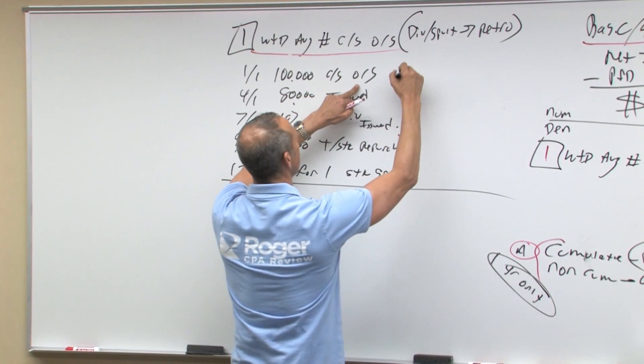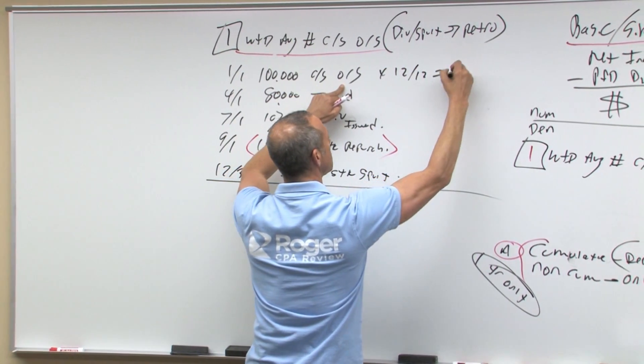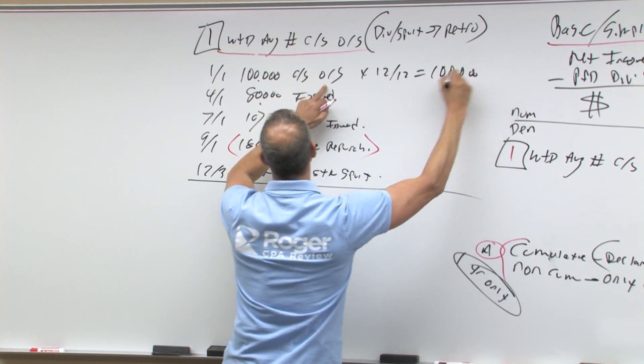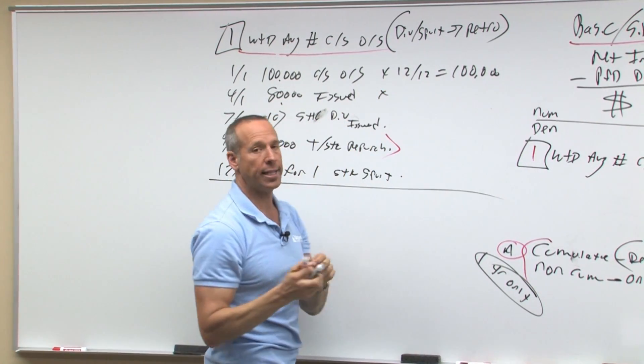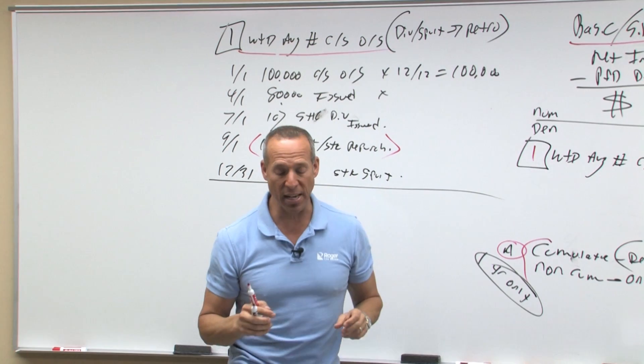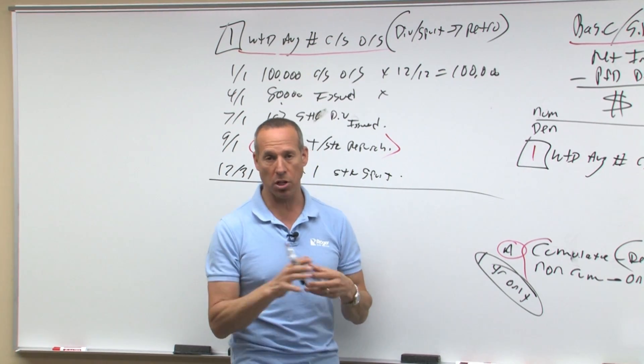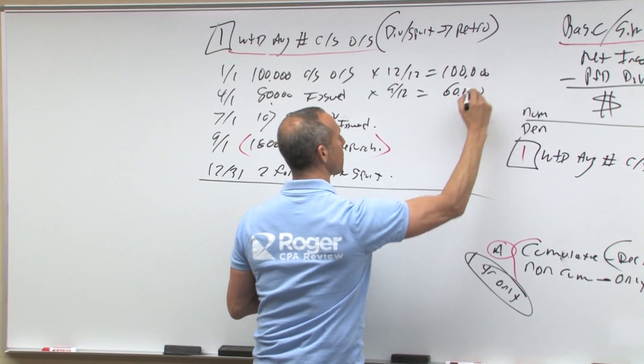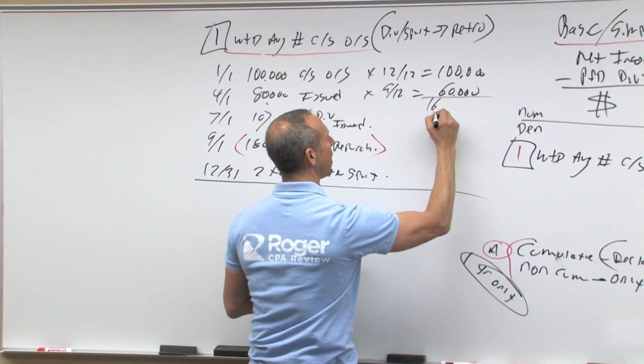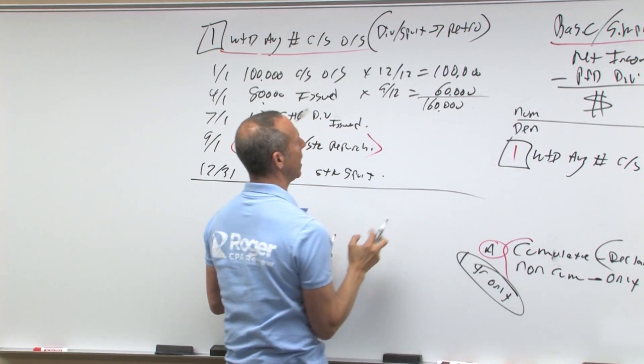Let's try it. So 100,000 outstanding, that's going to be for 12 twelfths, which is 100,000. Then 80,000 is outstanding for how much of the year? Well, it's April Fool's Day, that means it's not outstanding for three twelfths, so it's outstanding for nine twelfths, which is 60,000. That's 160,000 so far.